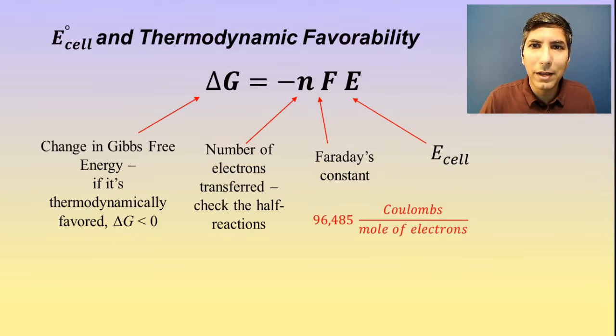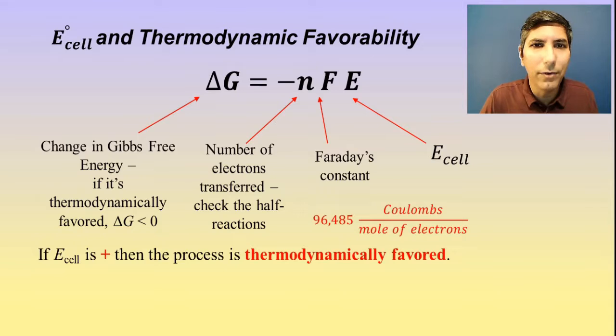As a reminder, almost all of our E cell values have been positive, and that's the case for a galvanic cell. All of the electrochemical cells that we've worked with so far in this unit have been galvanic cells.